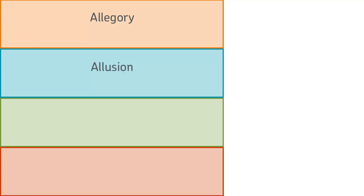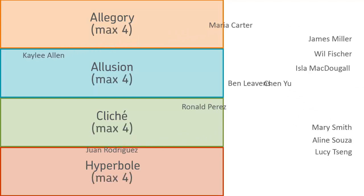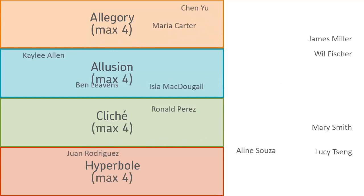For example, your class is doing group presentations. There are four presentation topics from which learners can choose. You allow the learners to choose their own groups. You create four groups and limit the groups to four members each.